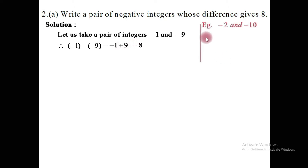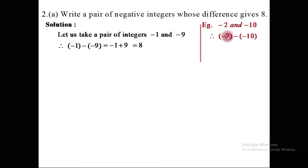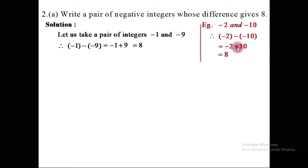Another example: minus 2 and minus 10. Taking the difference, subtracting minus 10 from minus 2: removing brackets gives minus 2 and plus 10. Opposite signs are subtracted: 10 minus 2 is 8. The bigger absolute value 10 is positive, so the answer is plus 8.